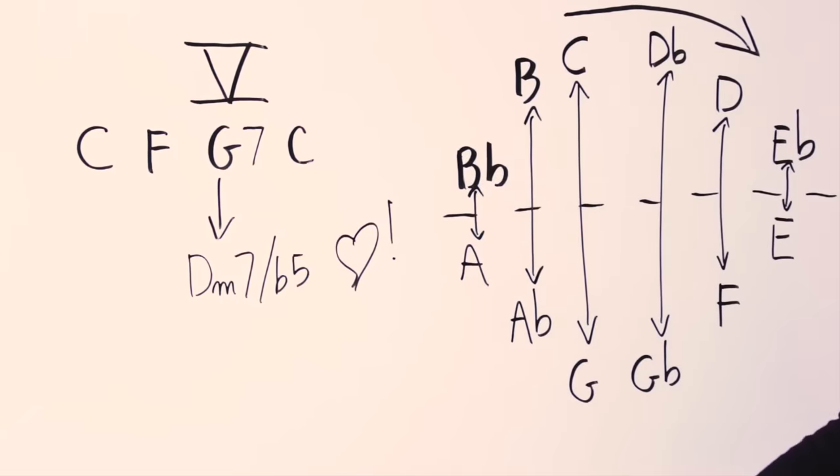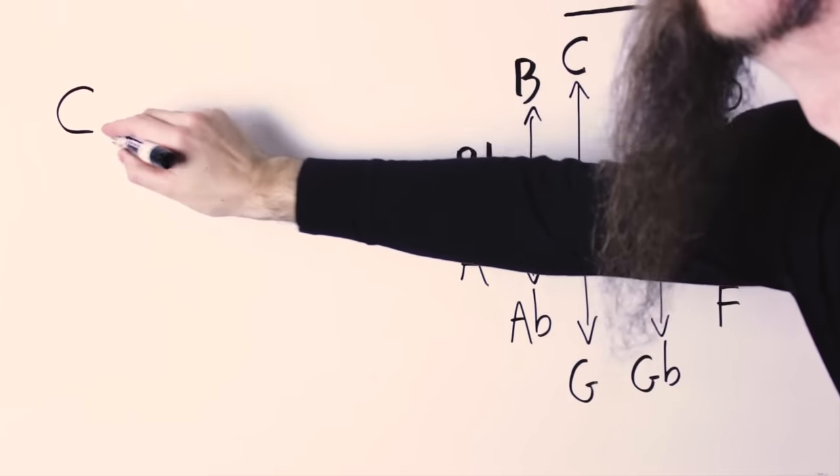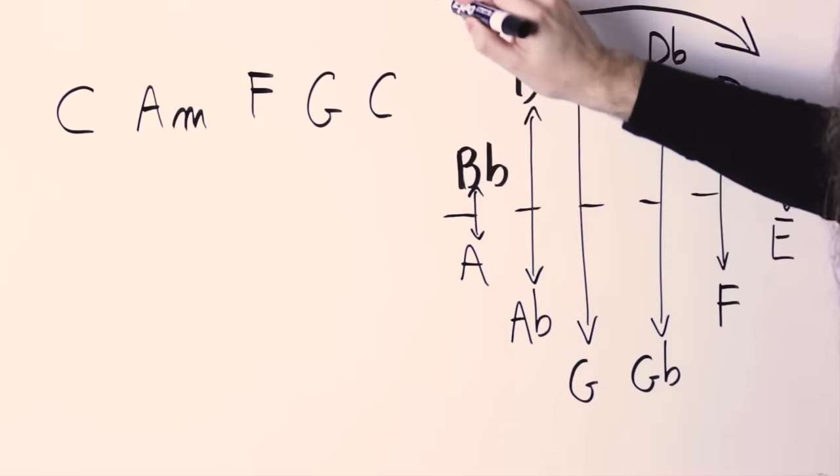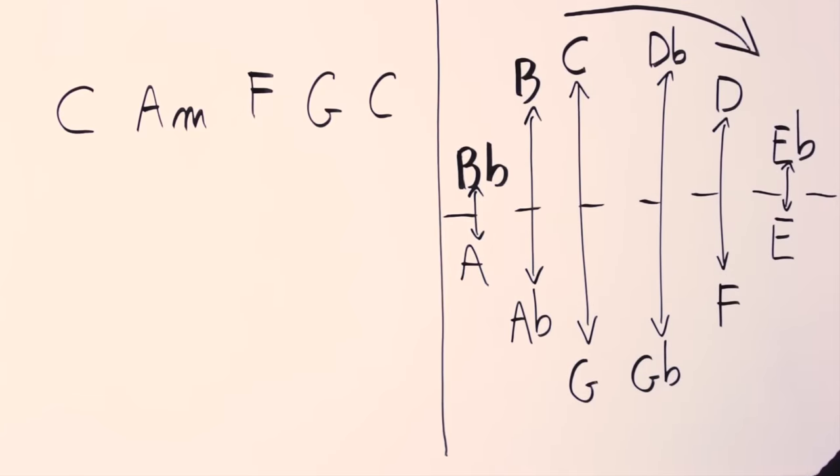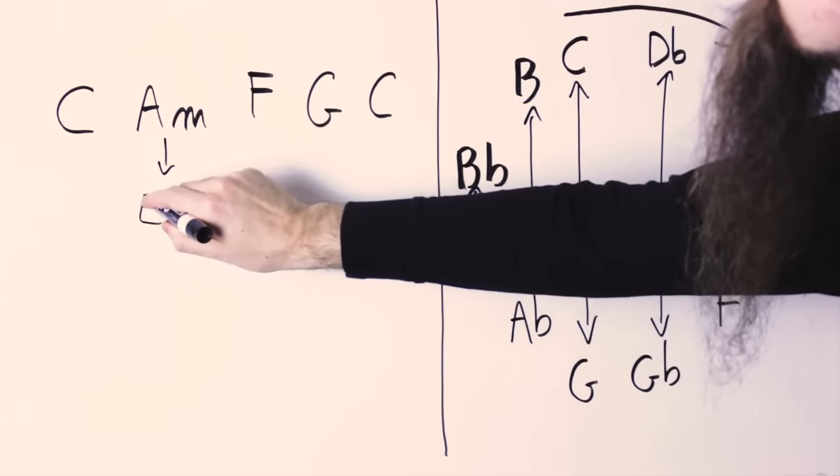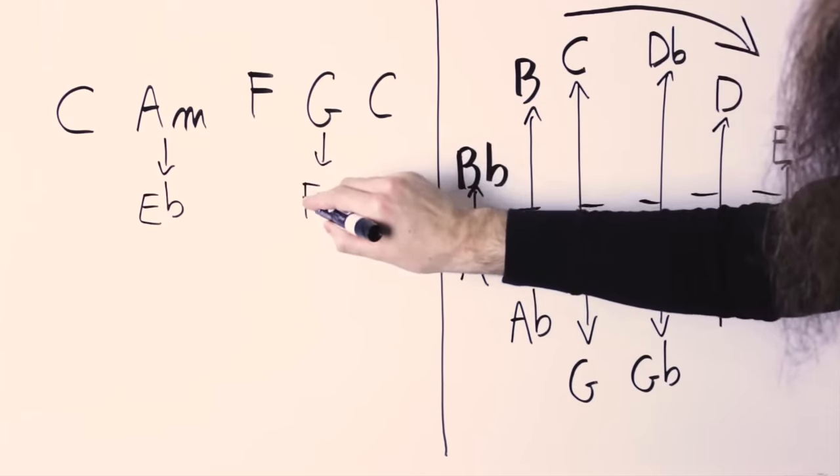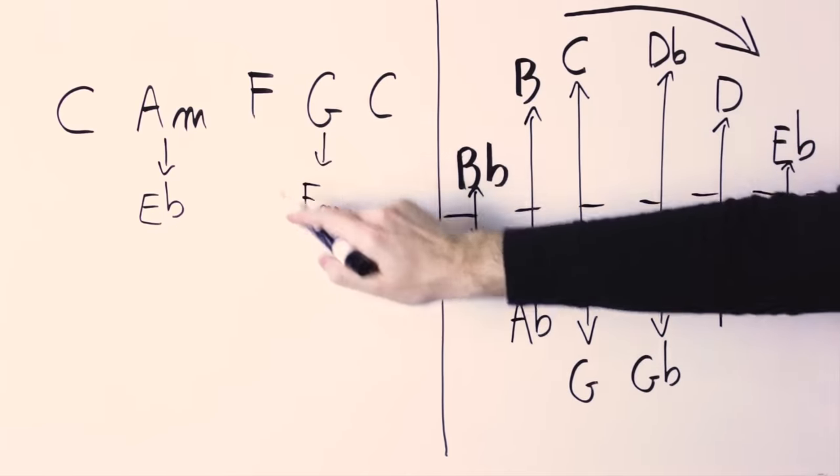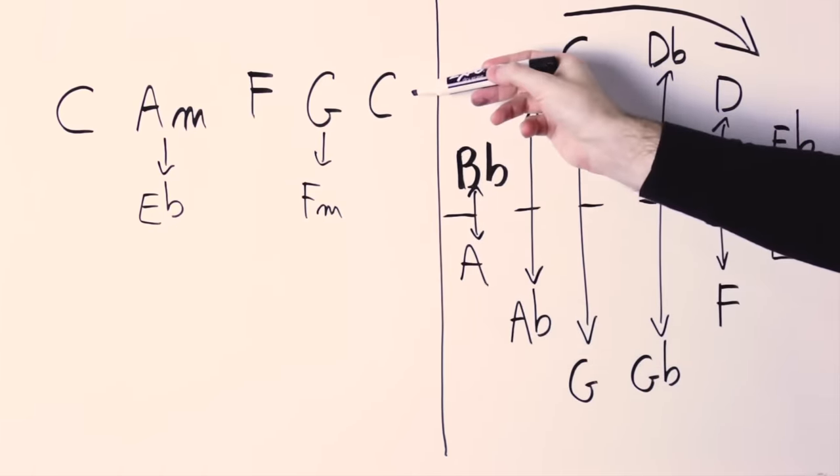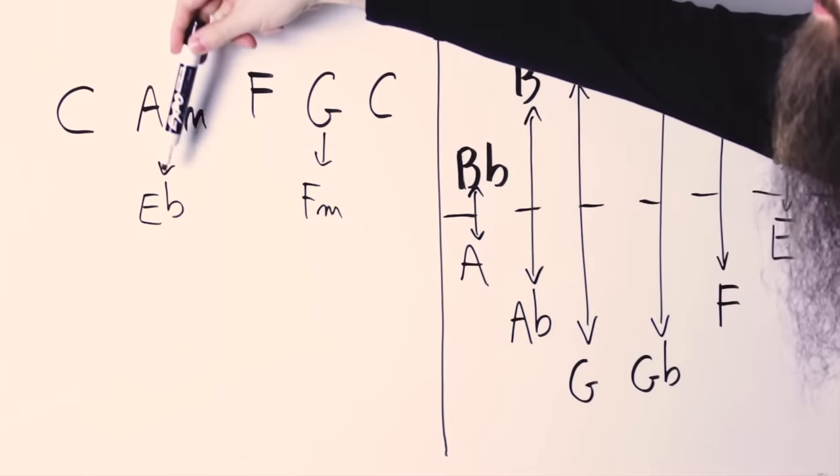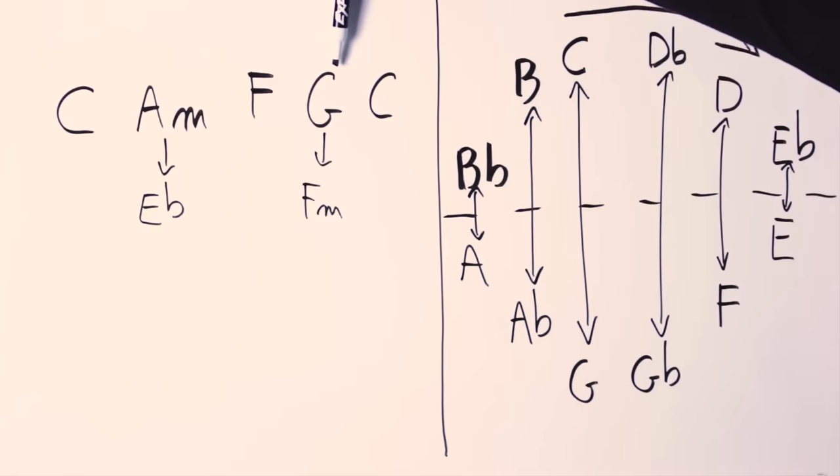Now, I can apply this to other chord progressions too. Let's say I have C, A minor, F, G. I could apply negative harmony only on the A minor and the G chord. The A minor chord would be transformed to an E flat chord, and the G major, as we have seen, to an F minor. So my final chord progression is C, E flat, F, F minor. Or I could keep the G as it is and change only the A minor into an E flat.